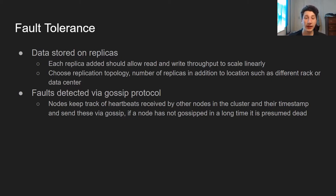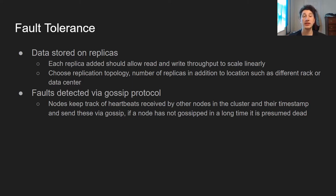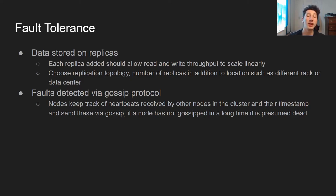In terms of fault tolerance, data is stored on replicas, which is generally how you handle fault tolerance. This is good for both writes and reads because writes only have to go to a certain percentage of nodes, reads only go to a certain percentage of nodes, and data is redundant via replicas. The replicas allow read and write throughput to scale linearly with the number of replicas. A cool thing about Cassandra is that you can choose the replication topology — not only how many nodes data is replicated to, but also which physical locations. You can ensure that if an entire server rack or data center goes down, at least one replica will still be standing. For detecting faults in nodes, Cassandra uses a gossip protocol.